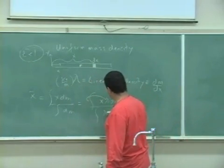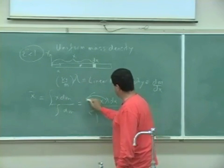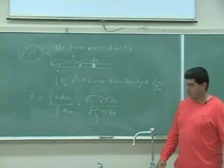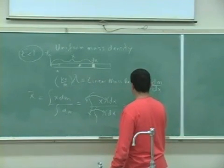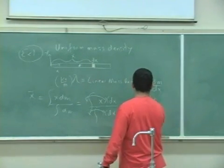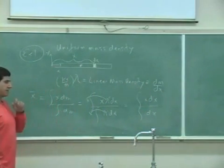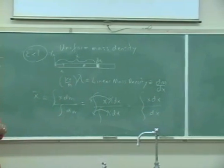So lambda comes out of the integral, lambda comes out of the integral and it cancels if it is uniform. So you're left with integral x dx over integral dx, from 0 to L, 0 to L.